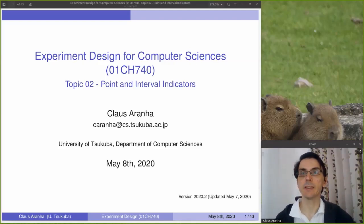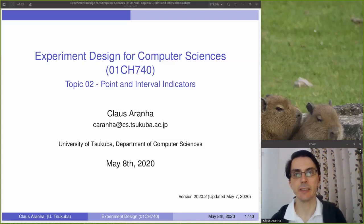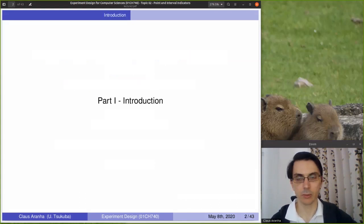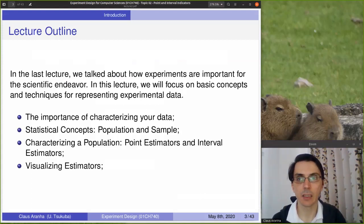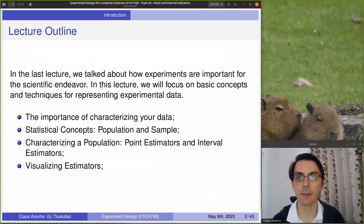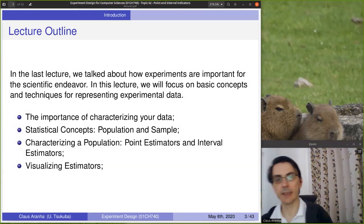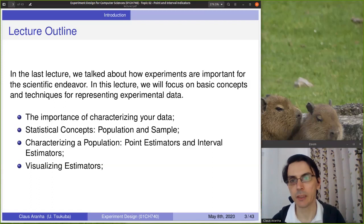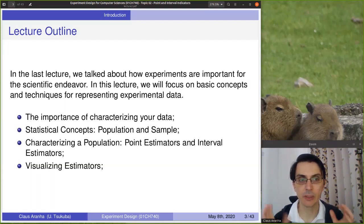Hello everyone, this is the second video for experiment designs for computer science. I'm Klaus Aranha from the University of Tsukuba and today we are going to talk about point and interval indicators. Let's give an outline. Last class we talked about what is an experiment and how we use experiments in science to get data about one system that we want to understand. In this lecture we're going to focus on that a little bit more — how do we use this data to learn about a system? We'll talk about the importance of characterizing data, and for this characterization we're going to use two main statistical concepts: population and sample.